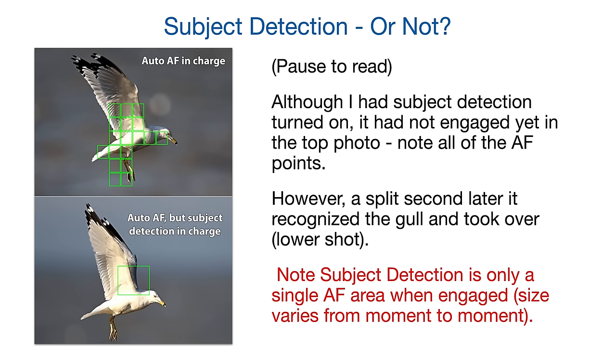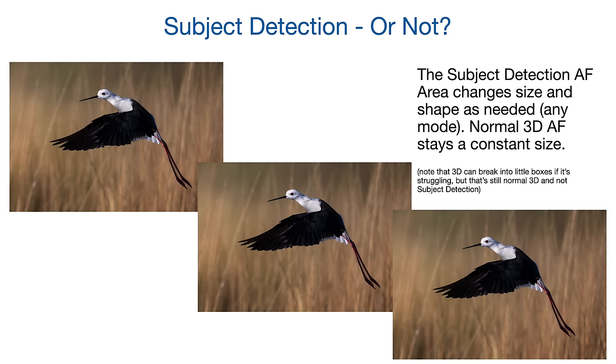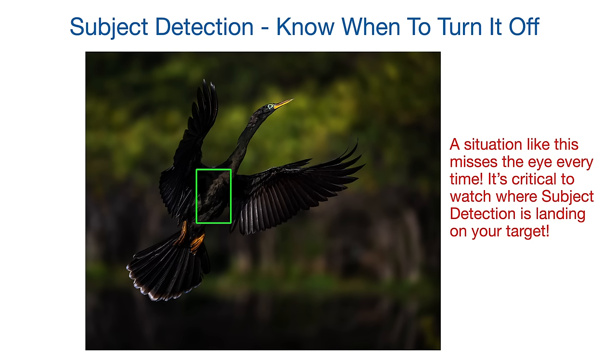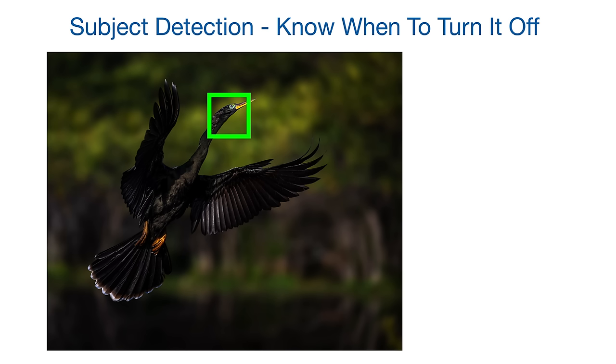For auto AF, if you see more than one box, subject detection is not engaged — the camera is just working as it normally does. It's important to know if subject detection is engaged and how it's interacting with your subject. For example, if subject detection is going to the wrong place on the bird — say going for the body instead of the face on a bird flying toward you at 45 degrees — every single eye will be out of focus. In that case, it's much better to shut subject detection off.